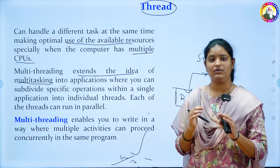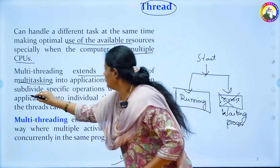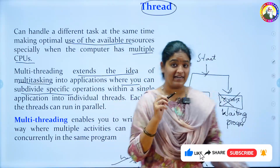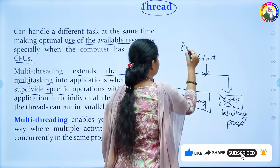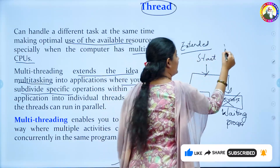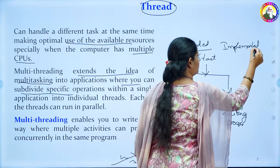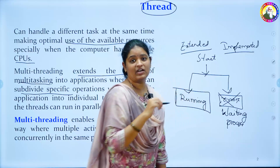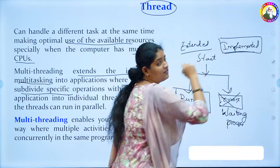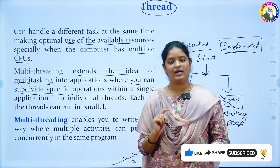If you want to take any threads, it will do multiple tasking, where it will be subdividing it. These threads can be either extended or implemented, where extended will be in a thread phase and implemented will be in a runnable phase. We have two types in multi-threading: one is the thread phase and the other is the runnable phase.